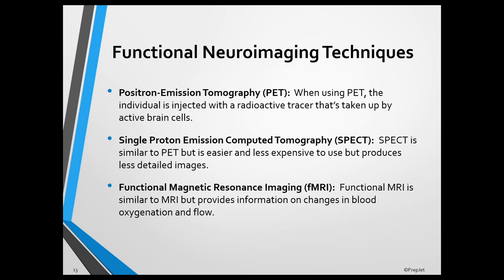These techniques include the three that are listed in the slide. When using positron emission tomography, the person is injected with a radioactive tracer that's taken up by active brain cells. Single photon emission computed tomography is similar to positron emission tomography, but is easier and less expensive to use, but produces less detailed images. And functional magnetic resonance imaging is similar to an MRI, but provides information on changes in blood oxygenation and flow.